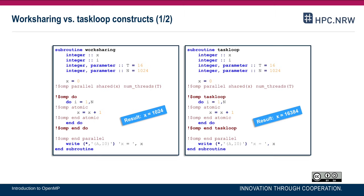If you want to change that, we have to use something we already know from task parallel programming: a single executor pattern. The idea is that one thread encounters the task loop construct with the nested i-loop, so there is one thread that generates all the tasks. The other threads, plus eventually that one thread, are available to execute the tasks. If we write code like that, the i-loop is executed only once, it is decomposed into tasks, all threads participate in the execution of the tasks, and the results are the same.